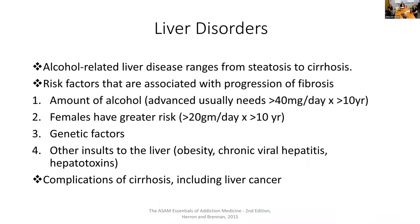Liver disorders in particular we see with alcohol use, ranging from fatty liver to cirrhosis. The risk factors associated with progression of fibrosis — meaning the chance that someone will develop actual scarring or cirrhosis — increase with the amount of alcohol. Females have a greater risk of quick progression, as do certain genetic factors and co-occurring conditions affecting the liver such as obesity, chronic viral hepatitis, or other hepatotoxin exposure. Once someone has developed cirrhosis, they have an increased risk of developing liver cancer.